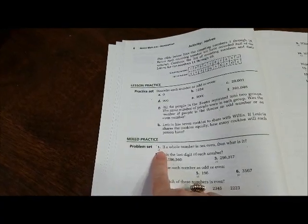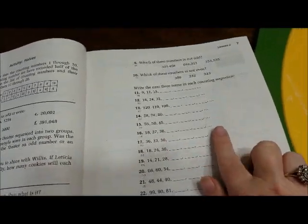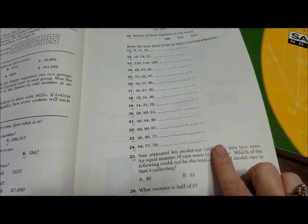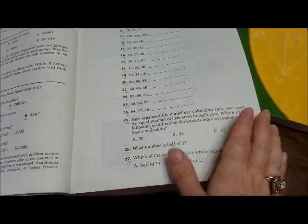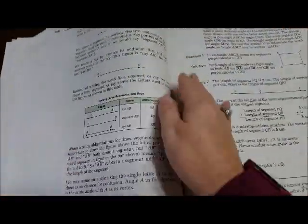And these little numbers under here, under the mixed practice, tell you which lesson that this is coming from. So if your child has problems, you can refer back to those lessons and review. I'm going to skip through some of this so I can just try to show you.